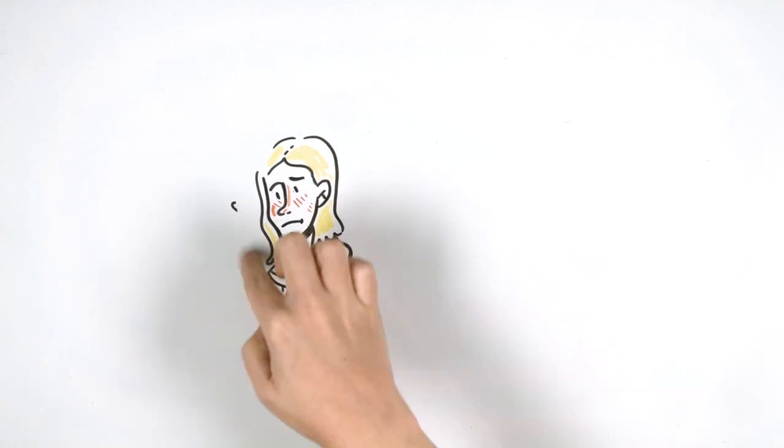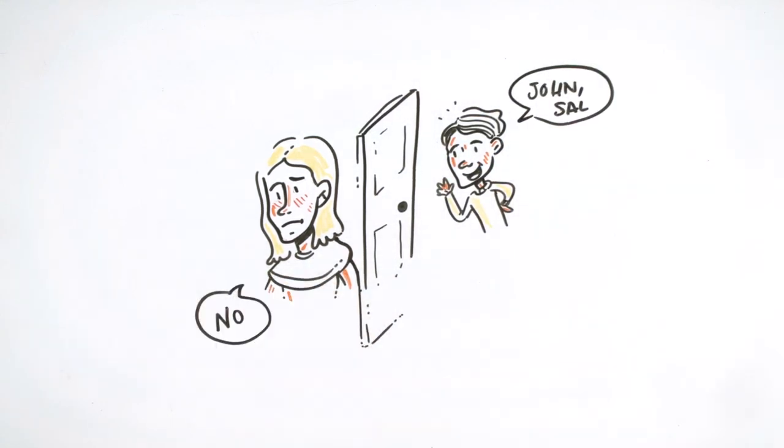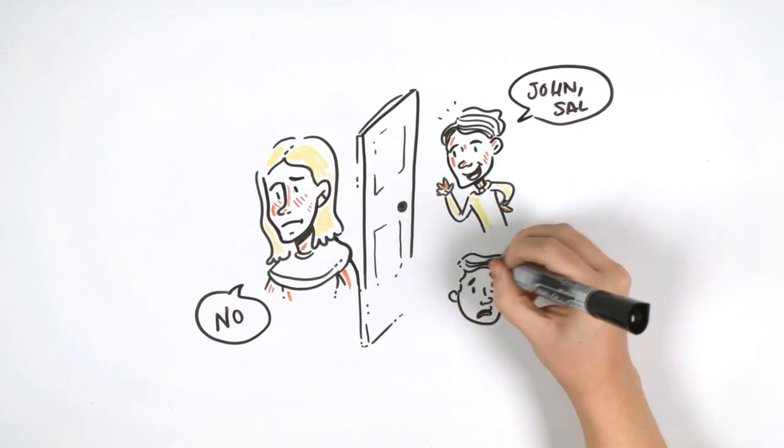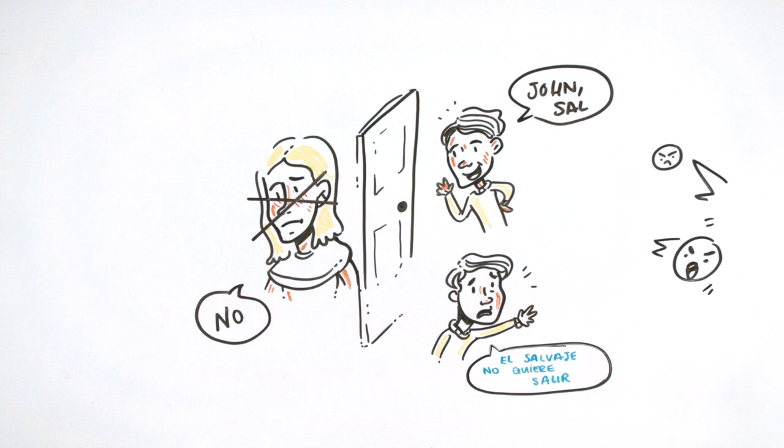One night, Bernard organized a dinner for those who did not know the savage yet, but John refused to leave his room. When Bernard informed the assembly of this refusal, everyone was enraged and left the room. When he was alone, he began to cry. His fame had plummeted.